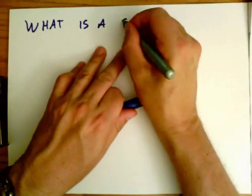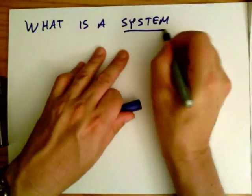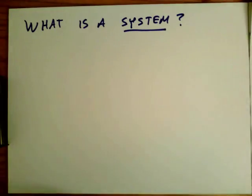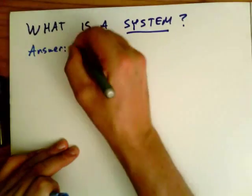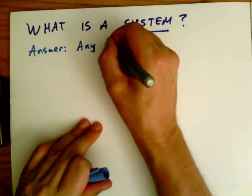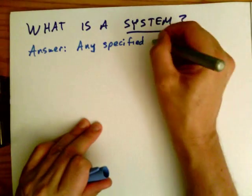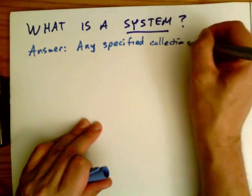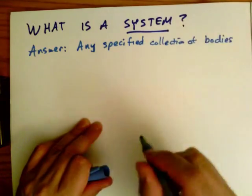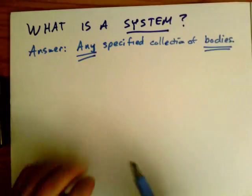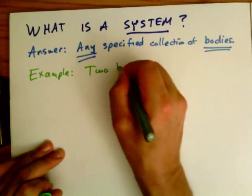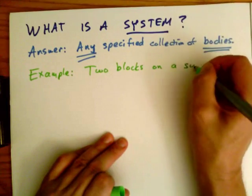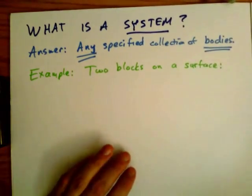What is a system? What do we mean by a system in physics? A system is defined as any specific collection of bodies. The key notion is that any bodies together constitute a system. For example, two blocks on a surface correspond to a system.